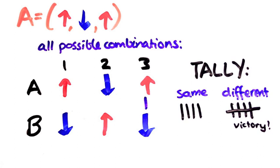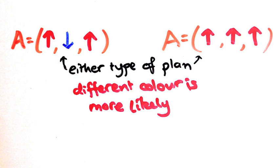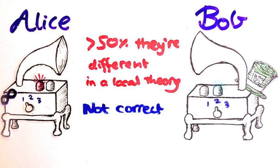So that means whether or not A and B pick a plan like this, or they pick a plan of the previous type, they will always be more likely to have different colours. But as we already know, this isn't the right result.